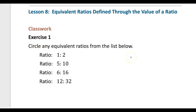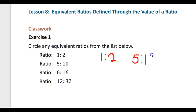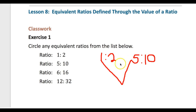Let's look at the first two ratios: 1 to 2 and then 5 to 10, and determine if they are equivalent. One of the things we learned before is that for ratios a to b and c to d, a times some constant must equal c, and b times that same constant must equal d.